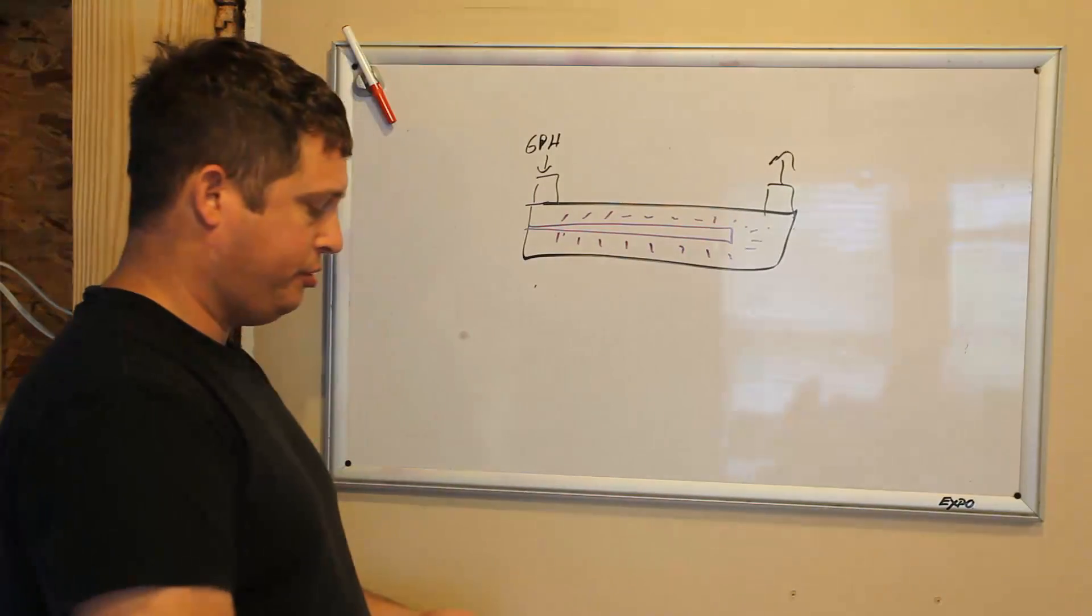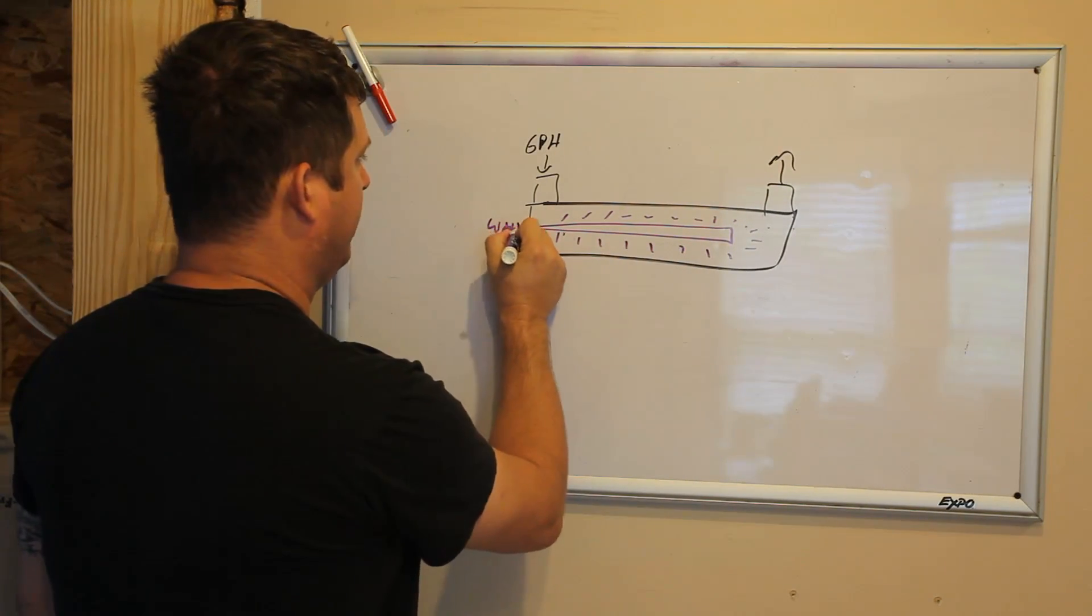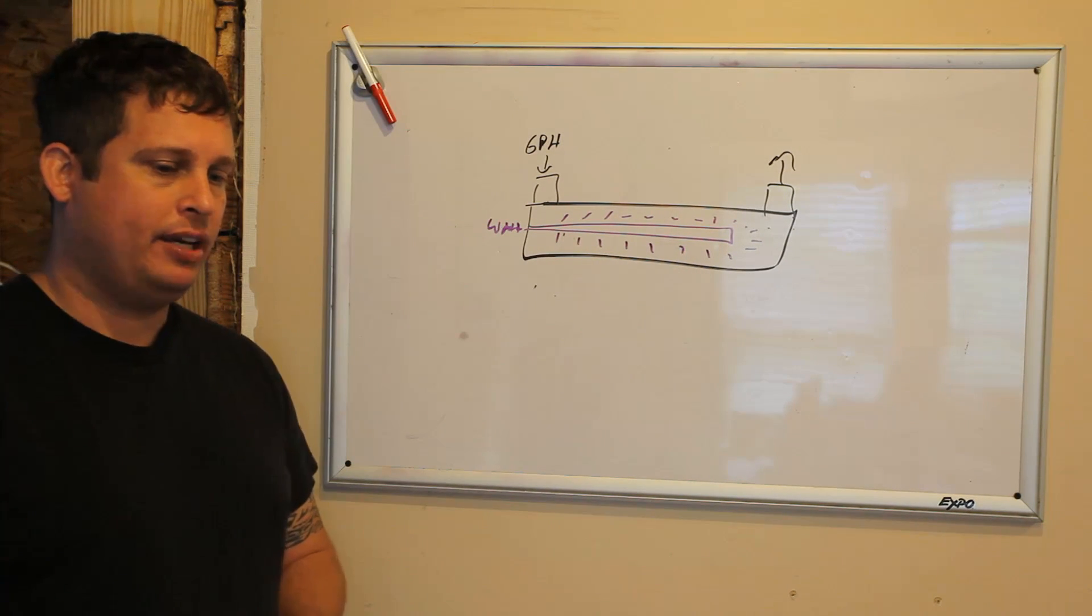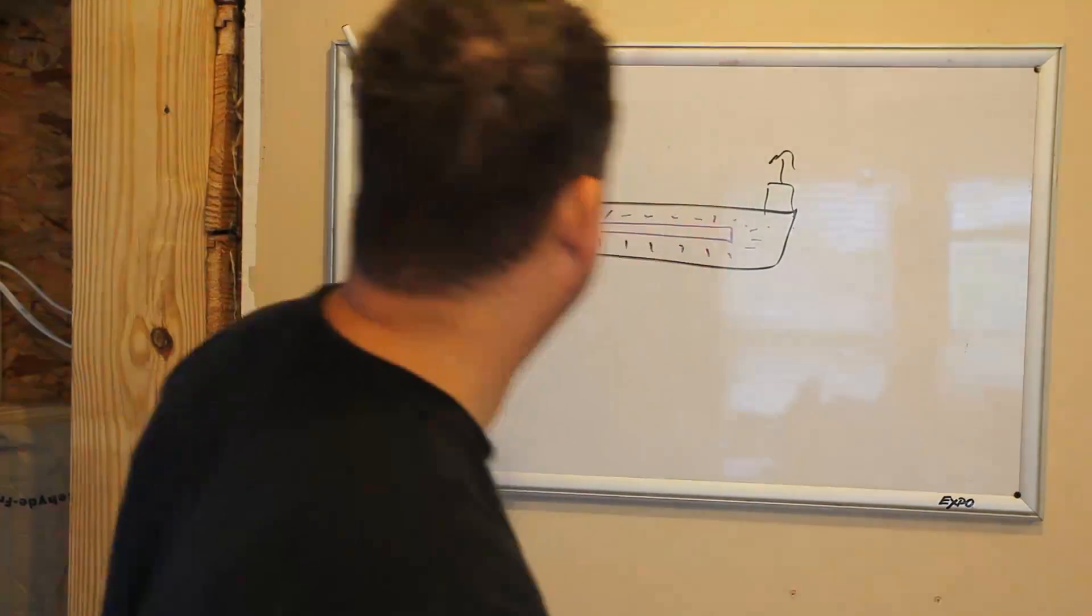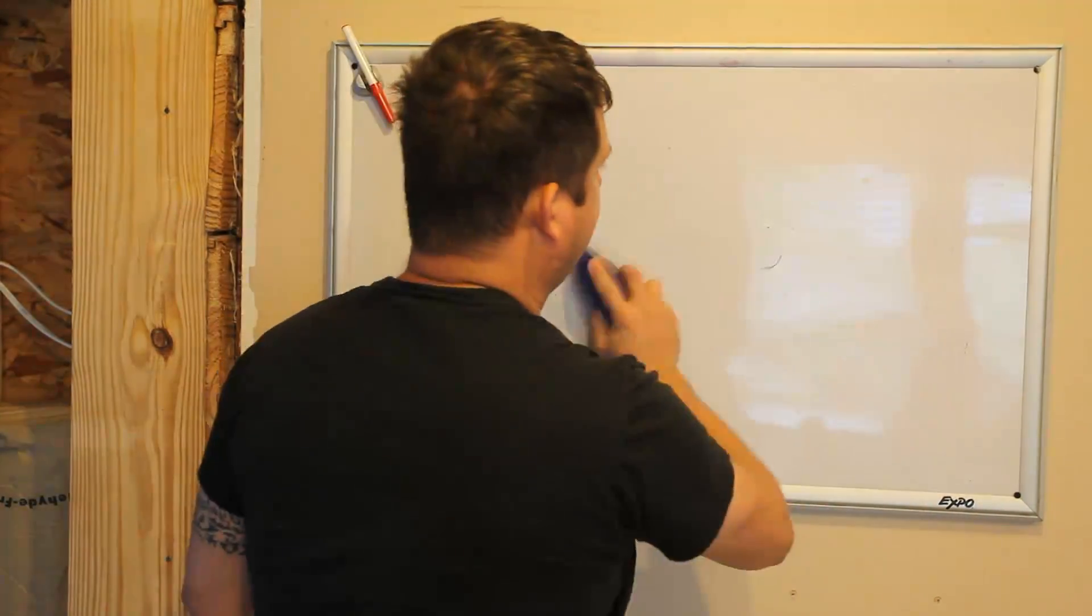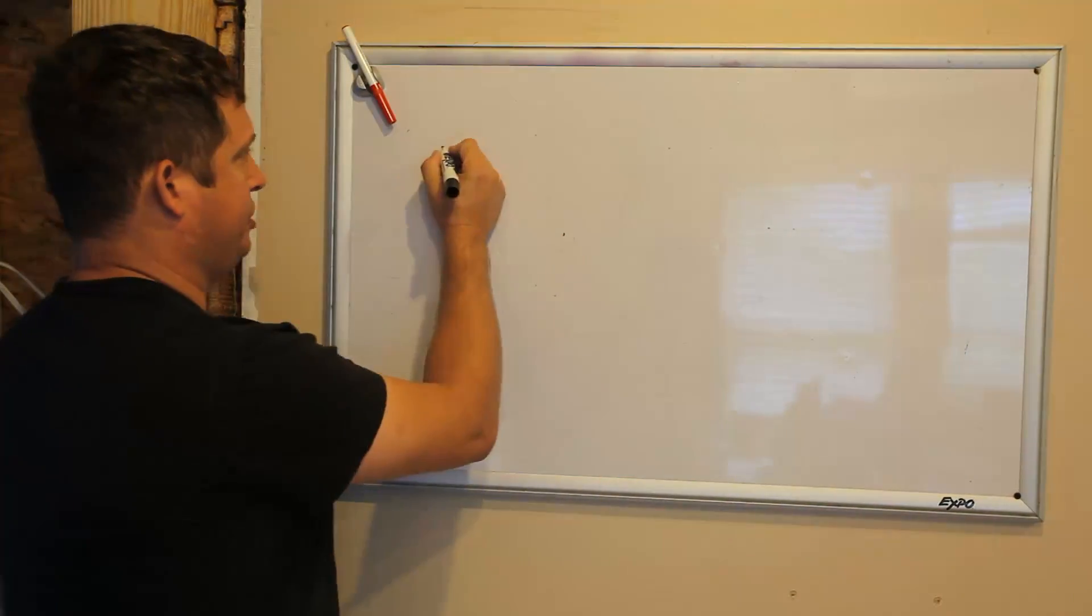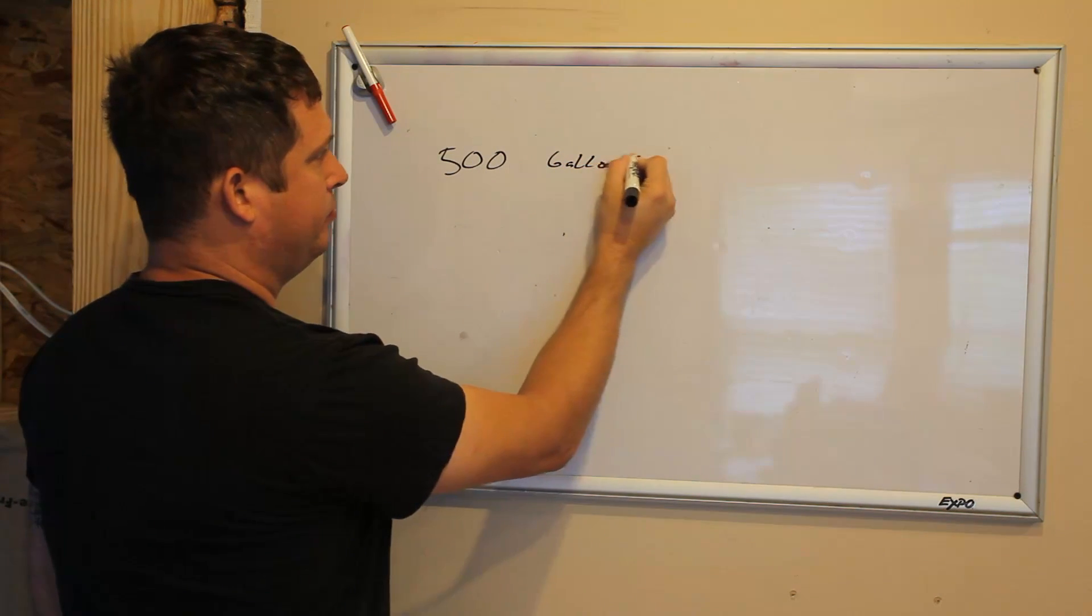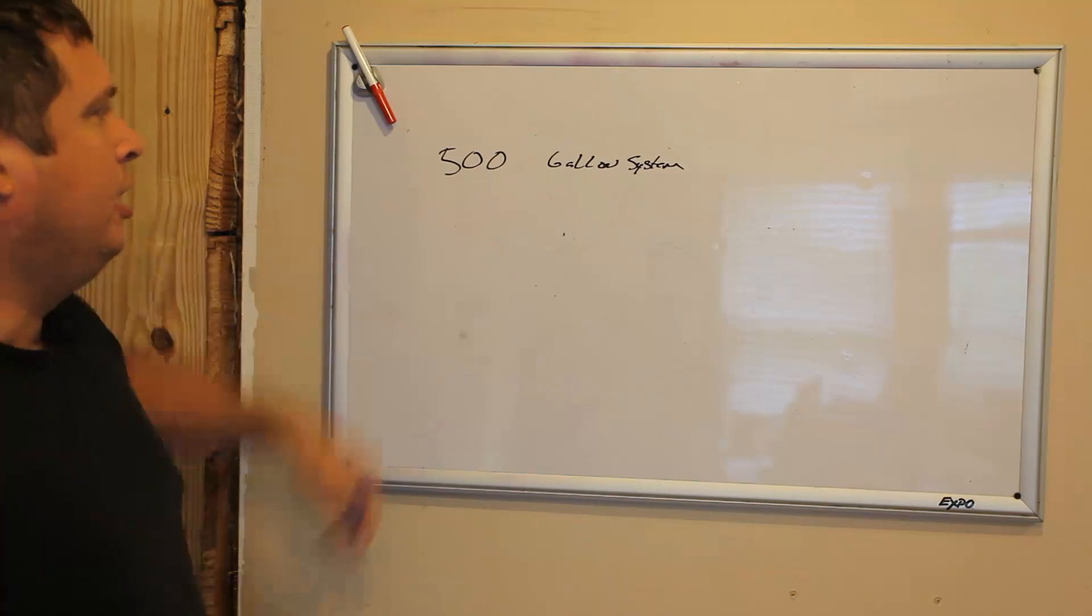Once you know what your dosage is, that will determine how many watts your light bulb is. The first thing you need to do is figure out what your system is. My system is a 500 gallon system.